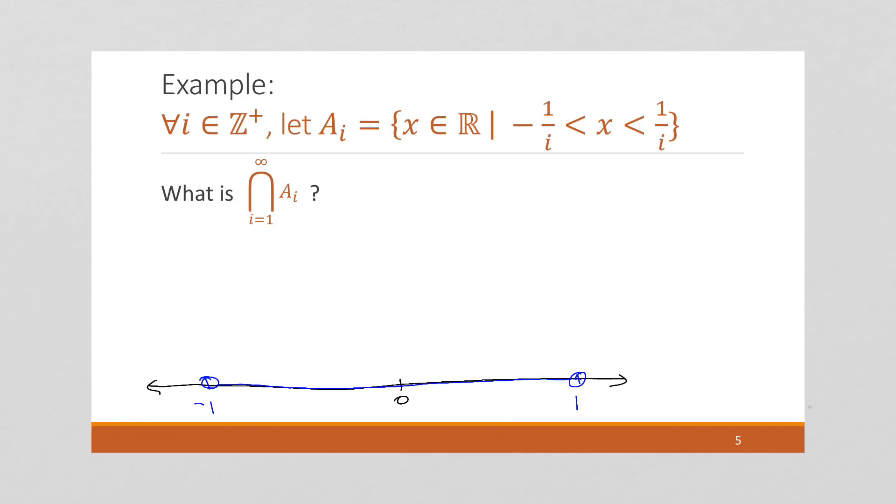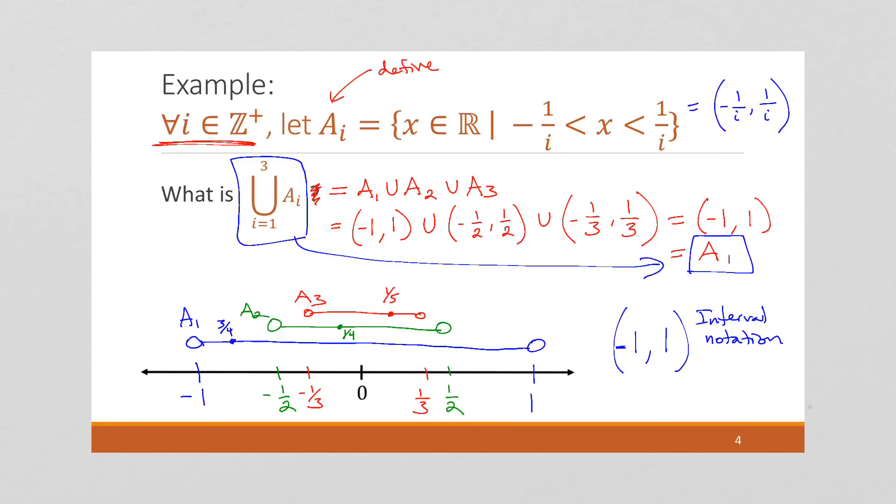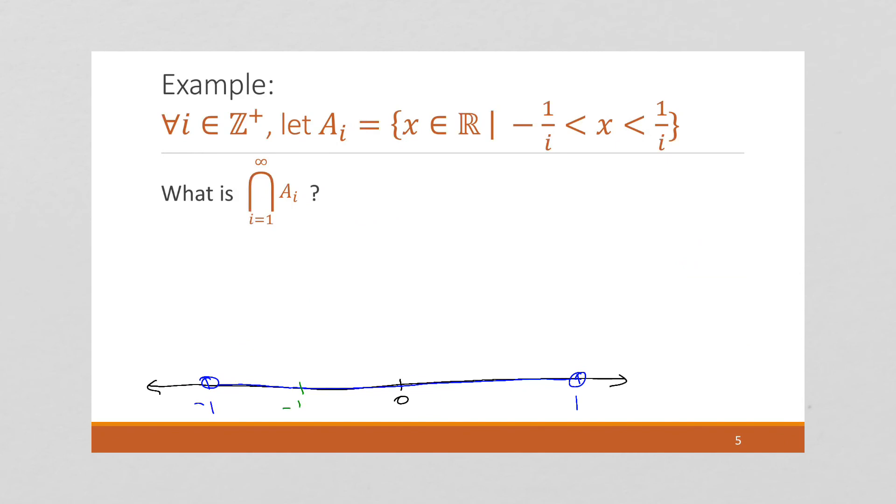So we saw how we have A_1 goes from negative 1 to positive 1. And then we have A_2, we have negative 1/2 to positive 1/2. All right. And then we have A_3, it's from negative 1/3 to positive 1/3.